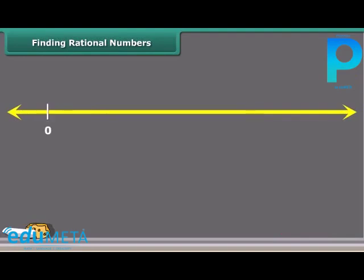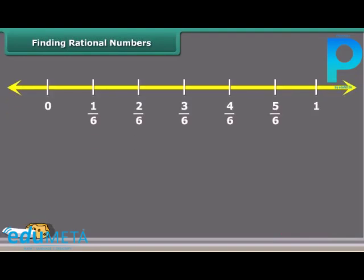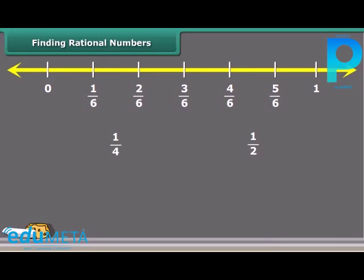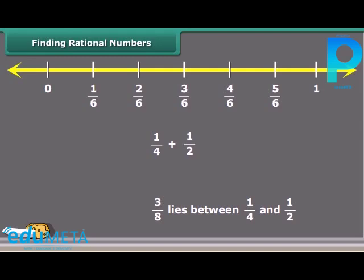Did you know that there are infinitely many rational numbers between any two rational numbers? Now we will learn about it. Let us find a rational number between two rational numbers using the mean method. We can say 3 by 8 lies between 1 by 4 and 1 by 2. First of all, we will find the sum of these numbers, which comes out to be 3 by 4. Now divide this sum by 2. We know division flips the second number and the sign changes to multiplication.